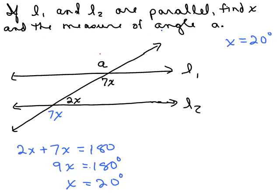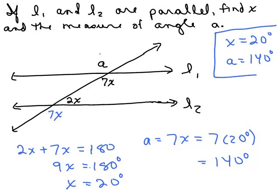Second part, find the measure of angle A. Okay, what's A? Oh, A is the same thing as 7X because those are vertical angles. A is the same thing as 7X and 7X is 7 times 20 or 140 degrees. And so those were the two things we were asked to do and that would be our answer.